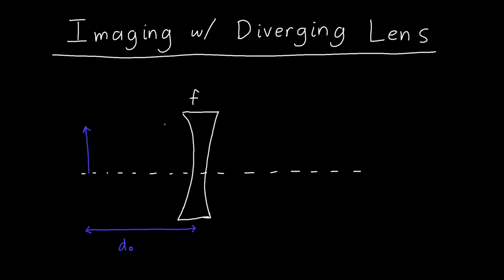In this video we're going to learn how to do ray tracing and imaging for an object through a diverging lens. Let's say that diverging lens has a focal length of negative 20 centimeters. Diverging lenses always have negative focal lengths - that's how you know they're a diverging lens.